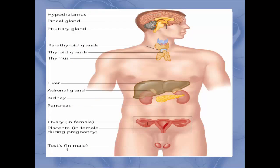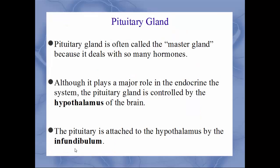Here is an illustration of the body with some of the major endocrine structures: the hypothalamus in the brain, the pineal gland, the pituitary gland, the parathyroid and thyroid glands, the thymus, the liver, the adrenal glands on top of the kidneys, the pancreas behind the stomach, and — for females — the ovaries and placenta during pregnancy, and for males the testes.